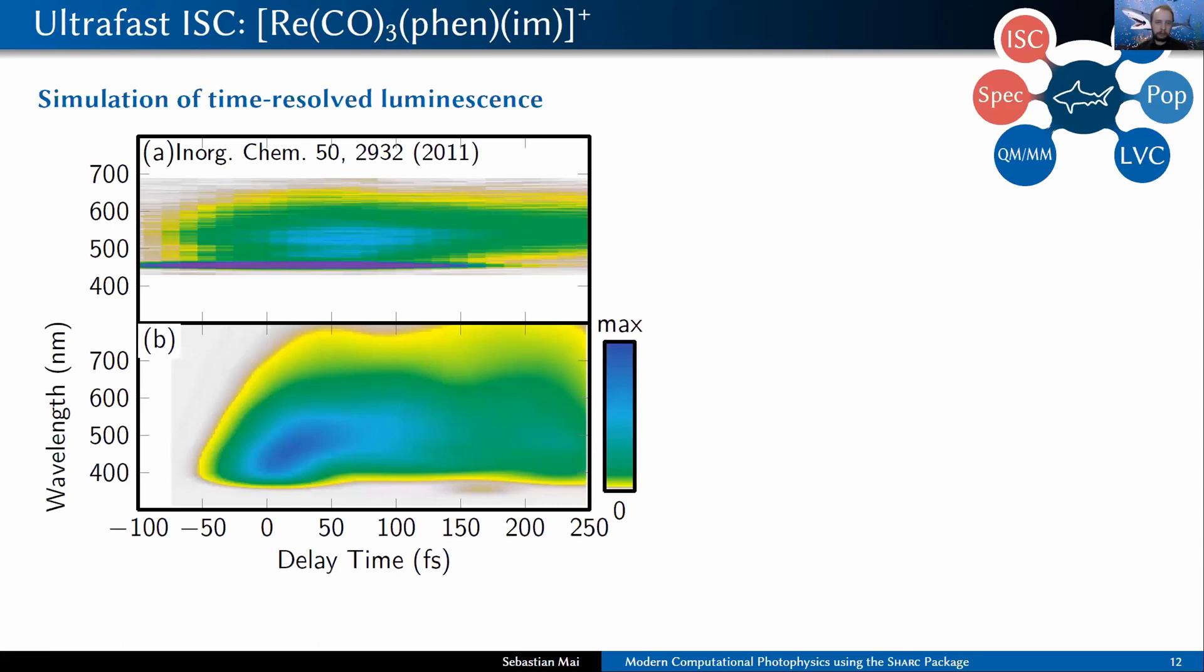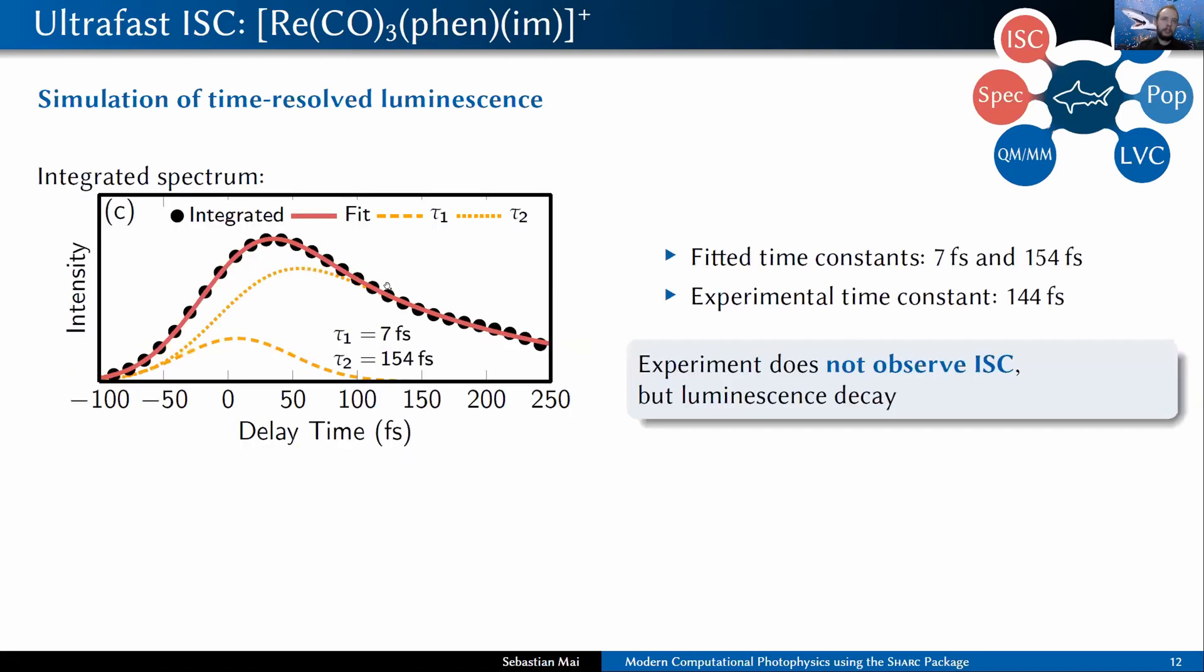We should always compare spectroscopic data to spectroscopic data, and therefore we simulated the time-resolved transient absorption spectrum and obtained a spectrum that looks kind of similar to the experiment. We then integrated the spectrum over the different energies and performed biexponential fit as in the experiment and actually obtained the time constant of 154 femtoseconds, which fits almost perfectly to experiment.